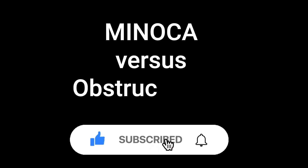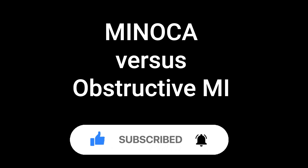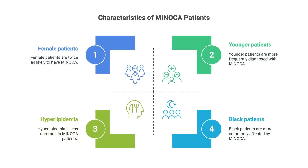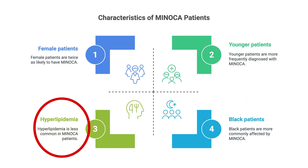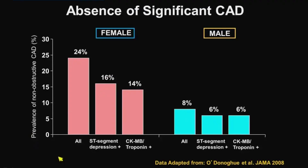Are there differences between MINOCA patients and patients with obstructive coronary MI? We know from a meta-analysis of thousands of patients that MINOCA patients are more likely to be younger, twice as likely to be female, more likely to be of African origin, and less likely to have hyperlipidemia. Female gender is particularly well represented in MINOCA — it's more common in the pre-menopausal period, and 40% of MINOCA patients in the largest meta-analysis were female.